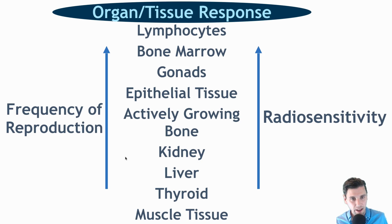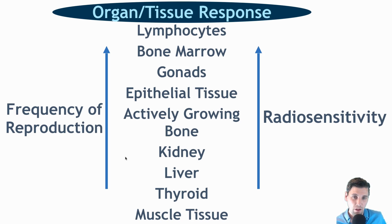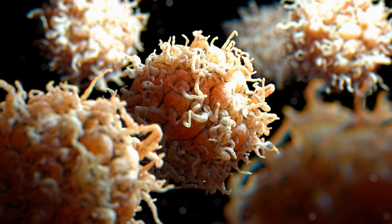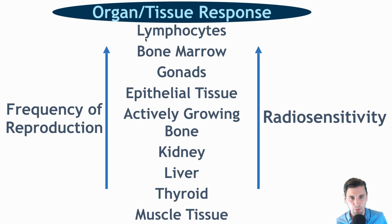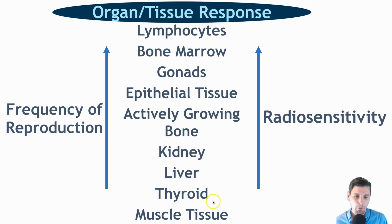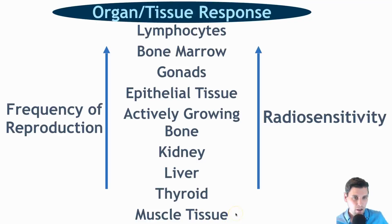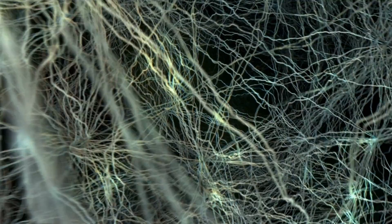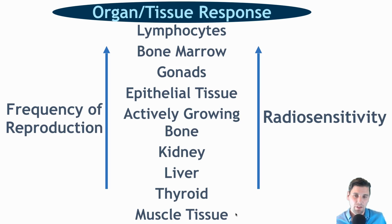If x-rays are incident on cells — especially while they're trying to reproduce — cells are more radiosensitive during reproduction, meaning cells that reproduce more frequently have higher radiosensitivity. Lymphocytes and white blood cells are constantly being replaced in your body, so they are very radiosensitive. In contrast, muscle tissue is less sensitive, and nerve cell tissue — replaced very infrequently — is even less so. This illustrates the correlation between radiosensitivity and the frequency of cell reproduction.